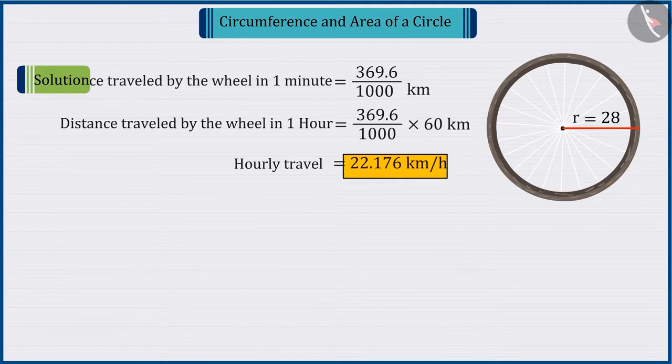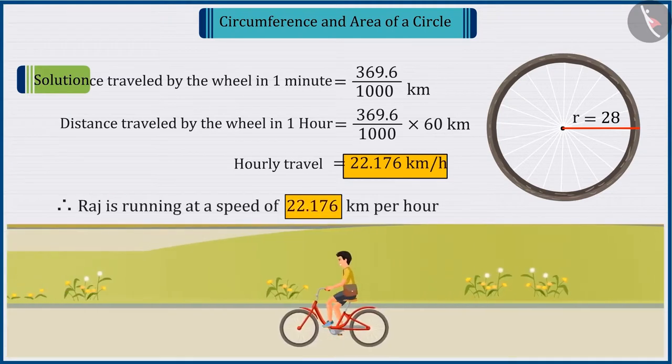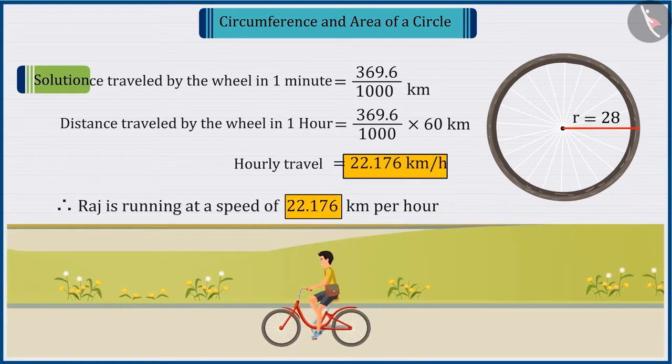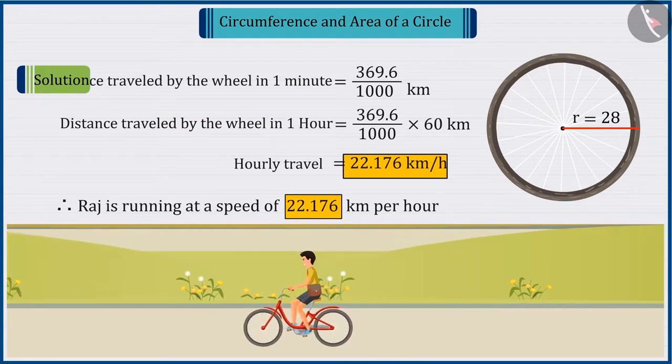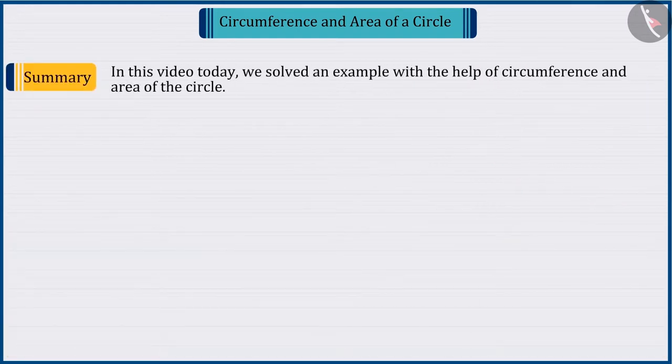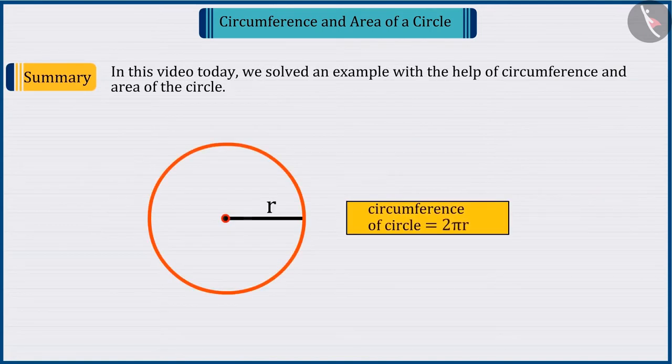So we can say that Raj is going at a speed of 22.176 km per hour. Today, we solved an example with the help of the circumference and area of a circle.